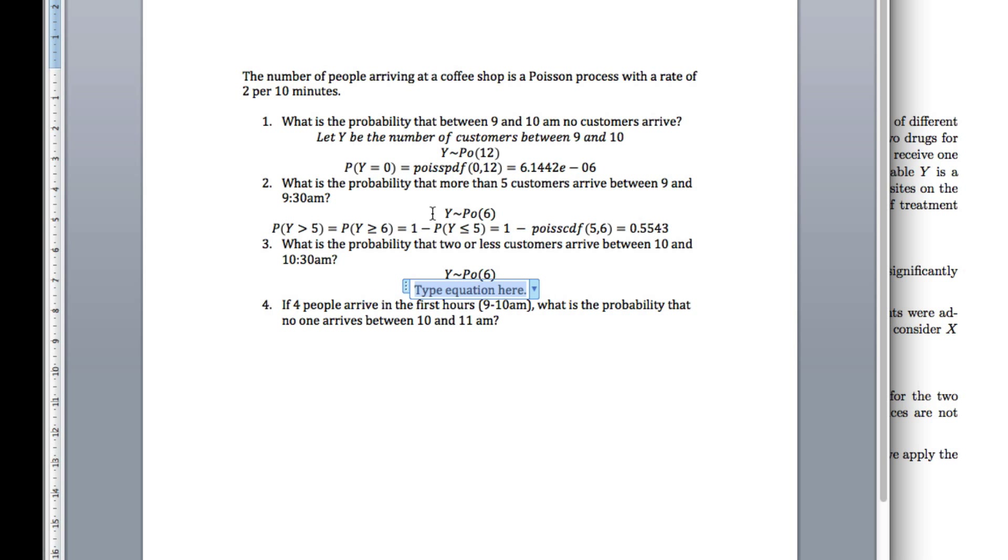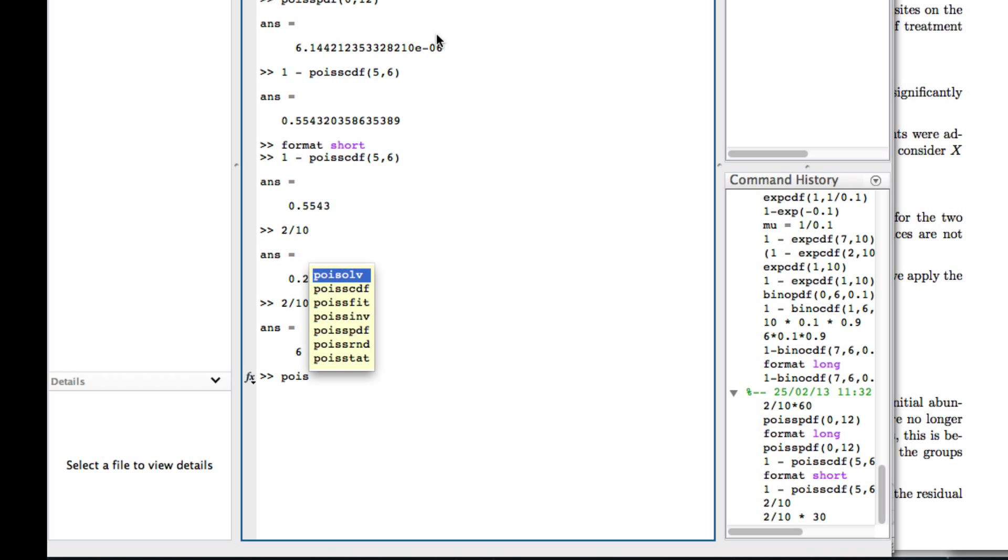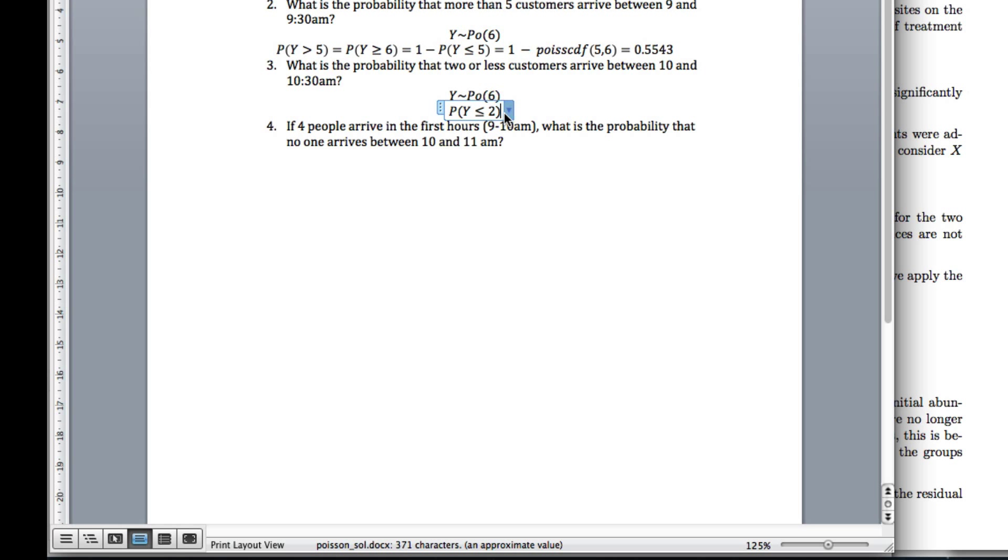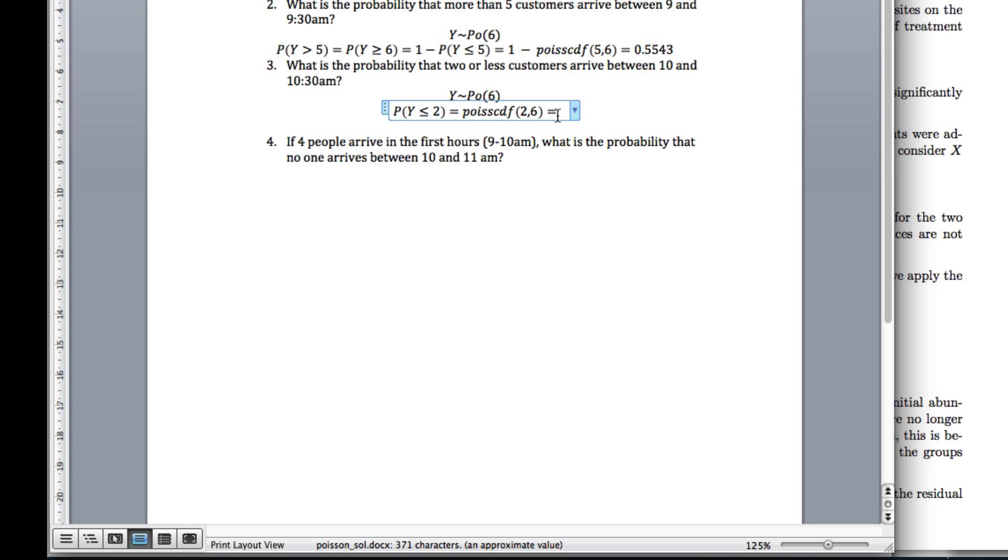What do I want? I want the probability of 2 or less. I want the probability Y is less than or equal to 2. It's already in the form of a CDF, so I can do that easy enough. I want poisscdf, I want 2, 6 is my rate. So there's the answer. I'll copy that one. And then the answer is that. Done.